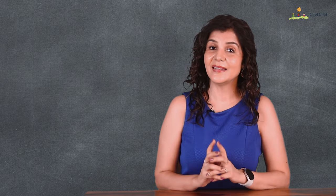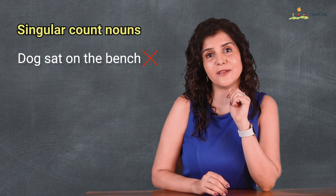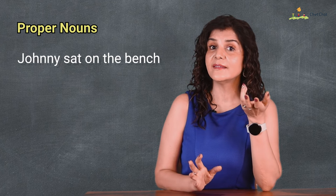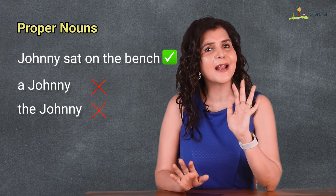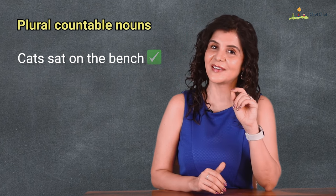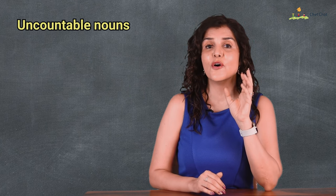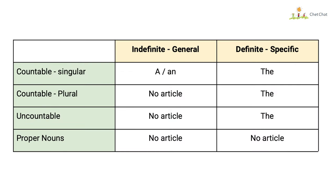Here's a table — you can take a screenshot. Singular count nouns require an article: we must say a dog sat on the bench or the dog sat on the bench. Proper nouns like Johnny do not need articles — we cannot say a Johnny or the Johnny. Plural countable nouns: cats sat on the bench is correct, and the cats sat on the bench is also correct. Uncountable nouns: fruit is on the table and the fruit is on the table are both correct.